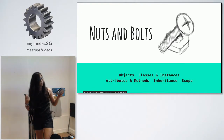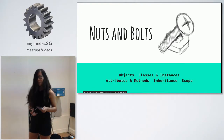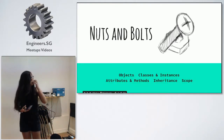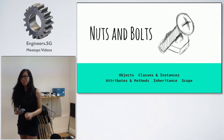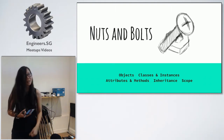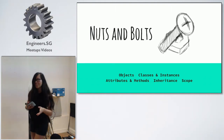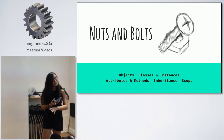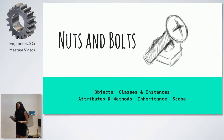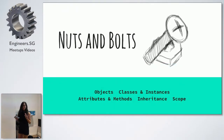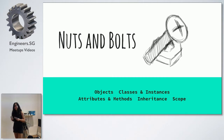The nuts and bolts - these are the topics I'll be covering: objects, classes and instances, attributes and methods, inheritance and scope. And if those words have completely gone over your head, do not fear. By the end of this talk, you should hopefully have a rough idea of what they mean.